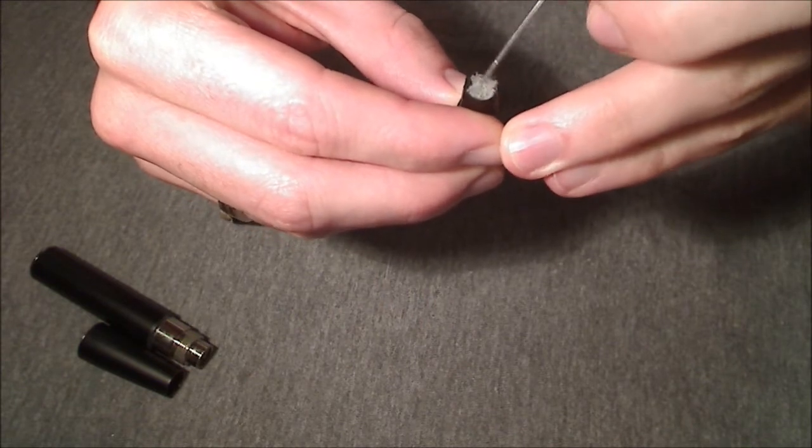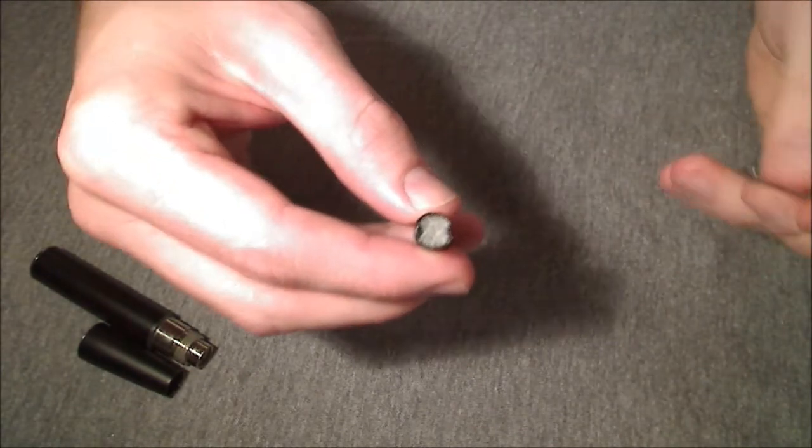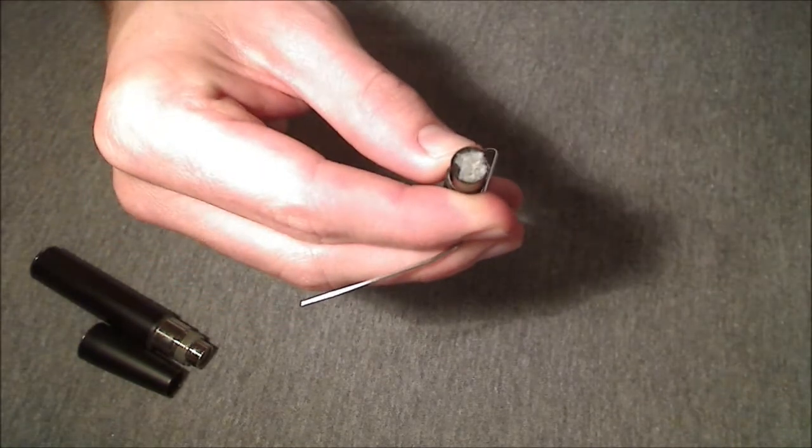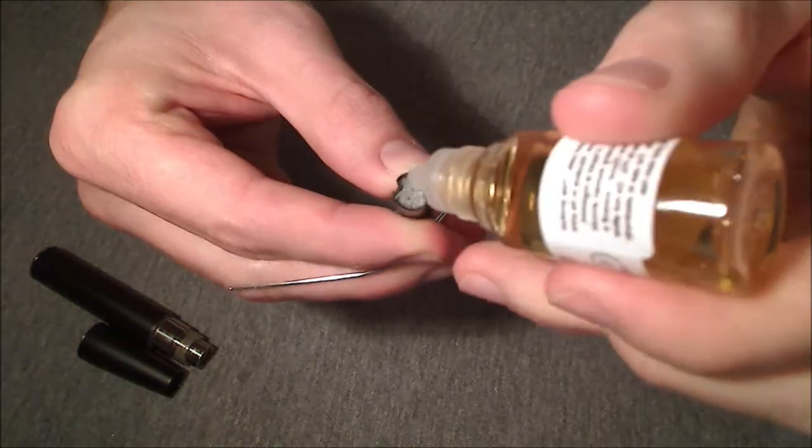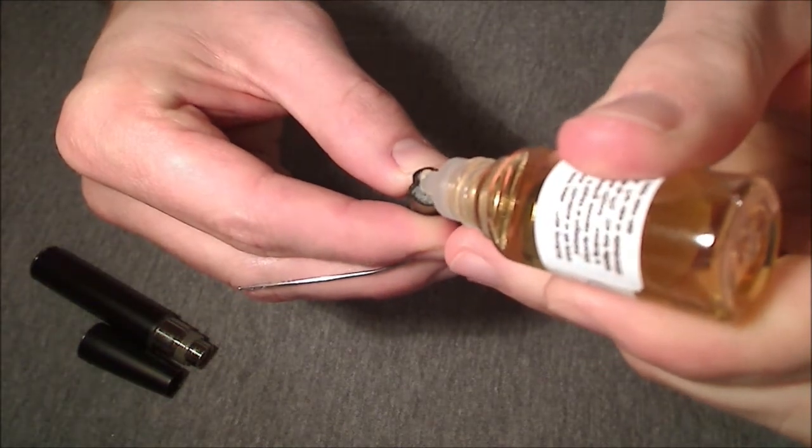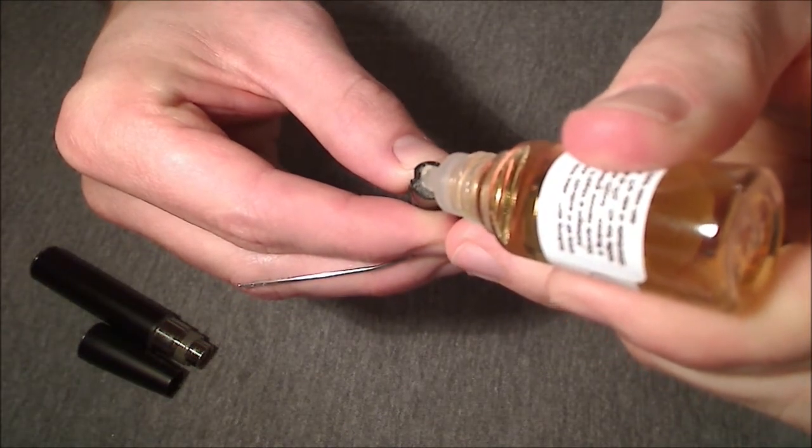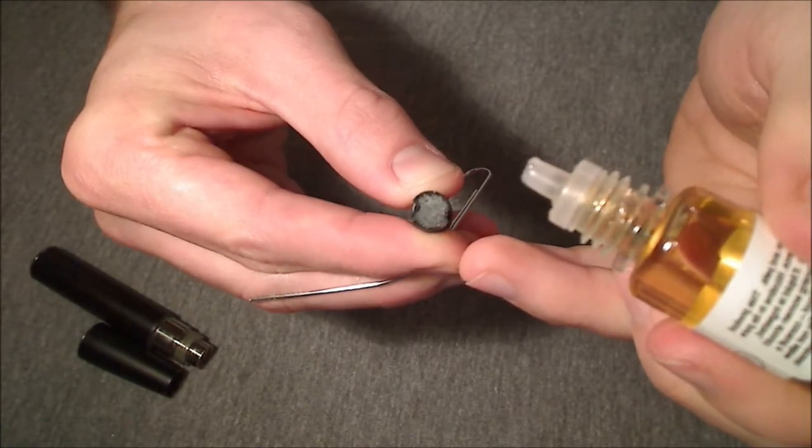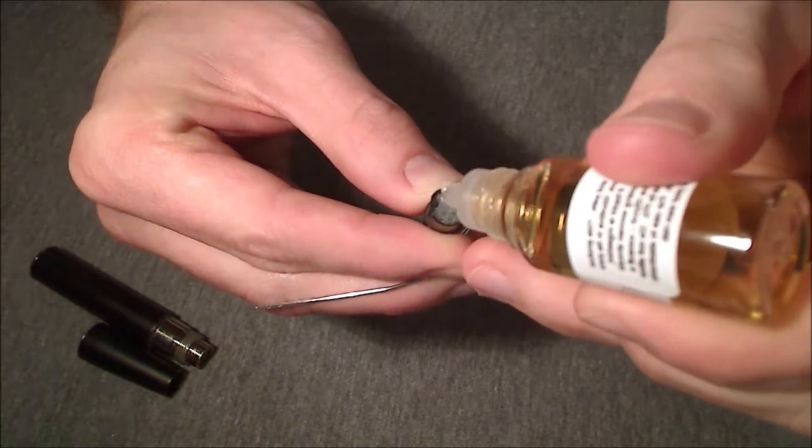Next thing we'll do is add a couple of drops directly onto the top of the filler here. So go one, two, three, four, five. Starting to look nice and moist now, you can see. And one or two drops over here.